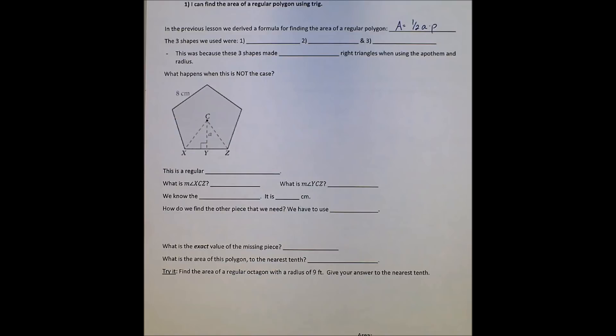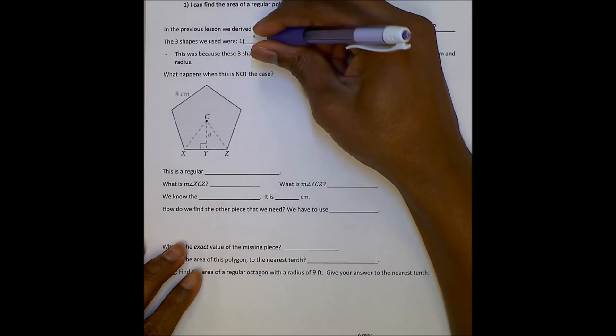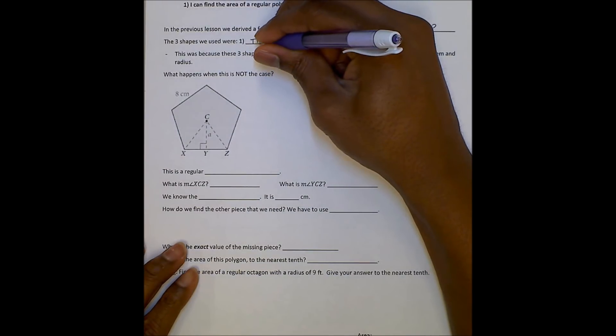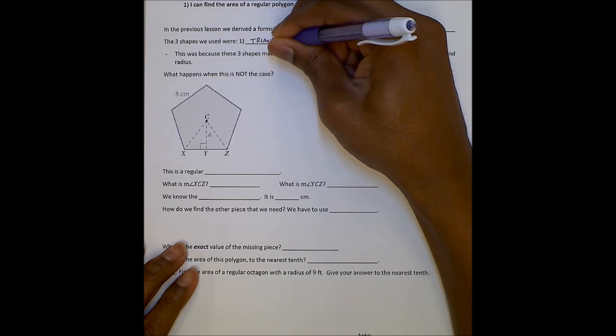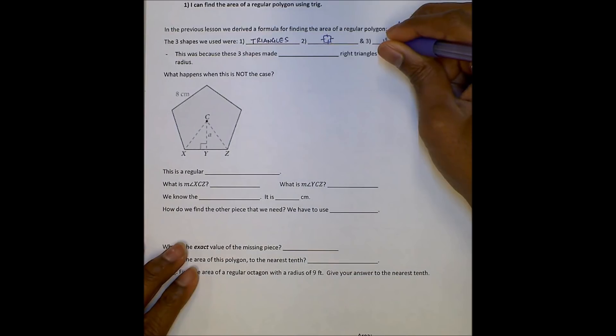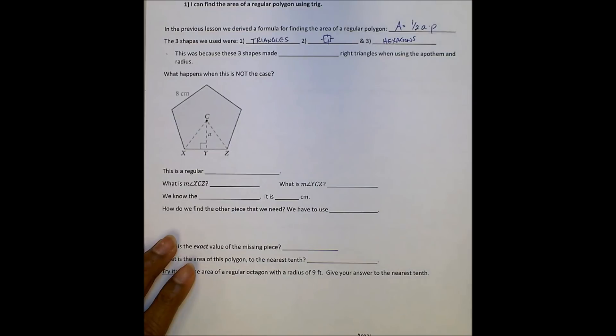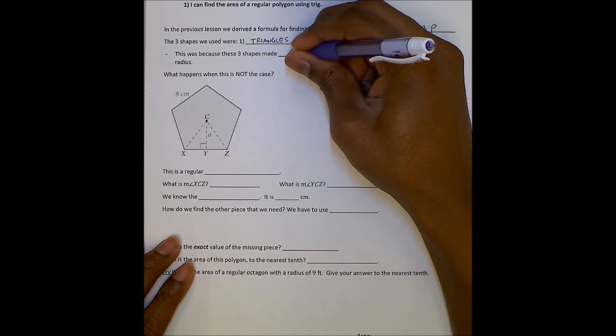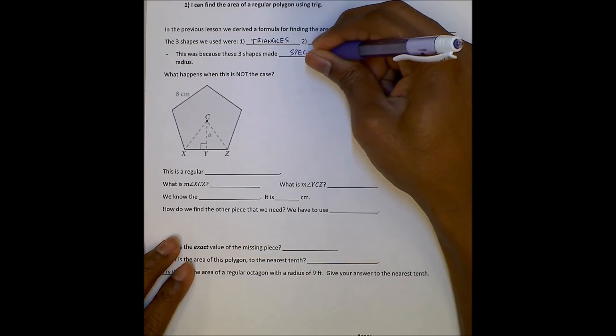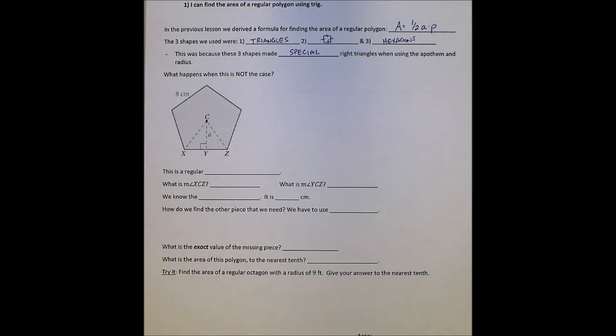The shapes that we used were triangles, squares, and hexagons. And we used these figures because these shapes made special right triangles, the 30-60-90 triangles and the 45-45-90 triangles. But what happens when the figure does not make a special right triangle? So let's look.